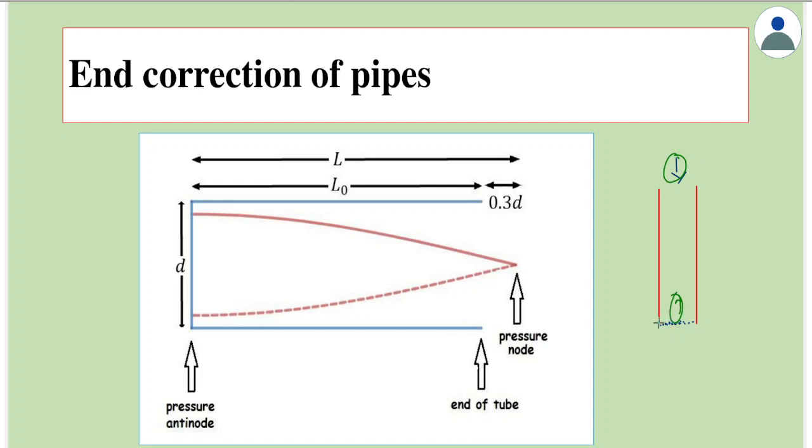what is seen is that because of inertia of motion of the particles—because these air particles will move—because of the inertia of motion, the reflection of the wave doesn't happen at the open end.